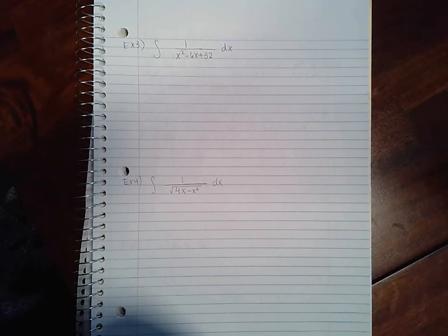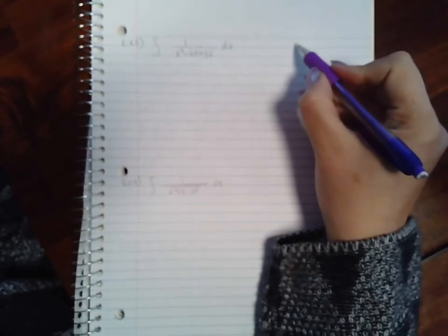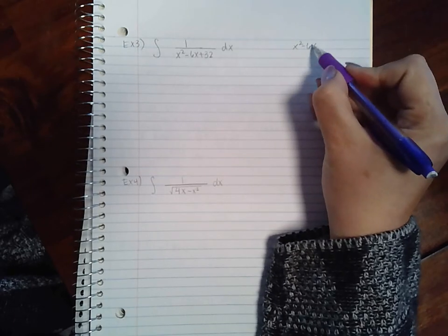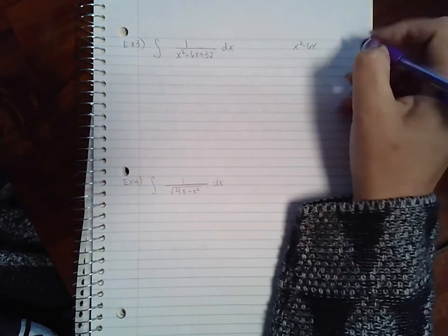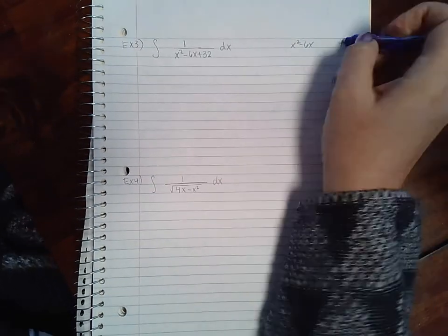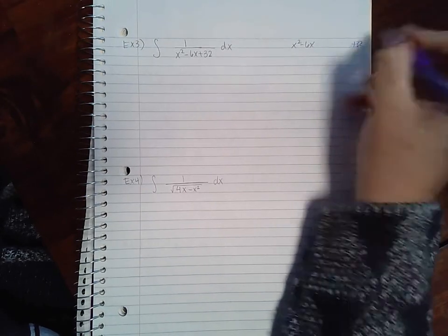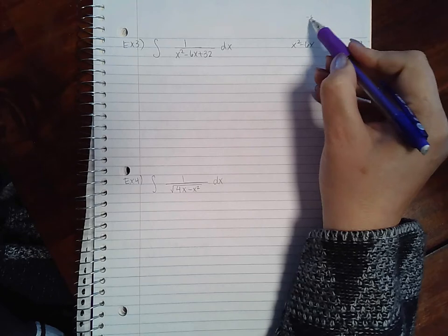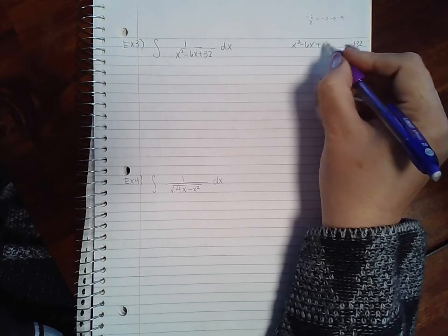Basically what I'm going to do is move the 32 off to the side and figure out what number I need to add and subtract to complete the square. Well, half of negative six is negative three, and if I square that I get a positive nine. So I'm going to add nine and minus nine.